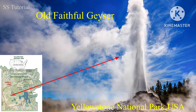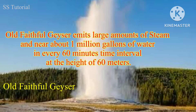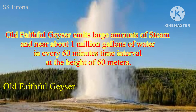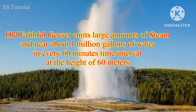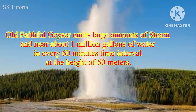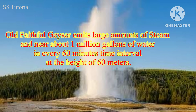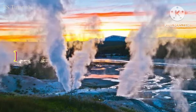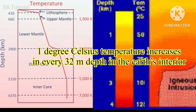The name of the famous geyser found in this park is Old Faithful Geyser. The world-famous Old Faithful Geyser emits a huge amount of steam and near about one million gallons of water at a height of 60 meters, almost every 60 minutes. Now let's know why geyser forms. On average, one degree centigrade temperature increases at every 32 meters depth in the earth's interior.